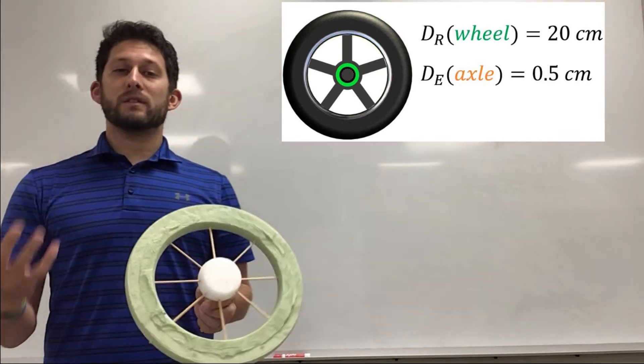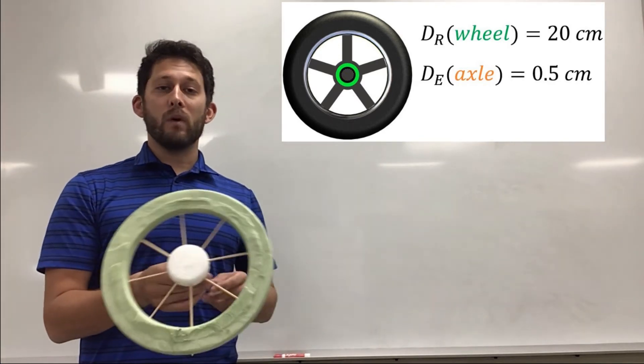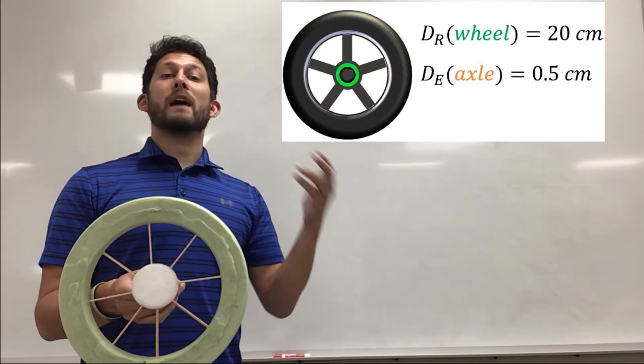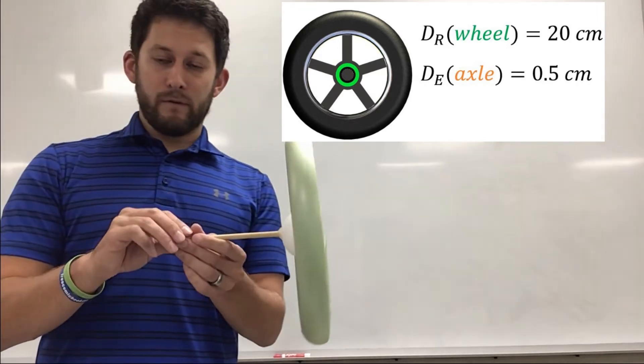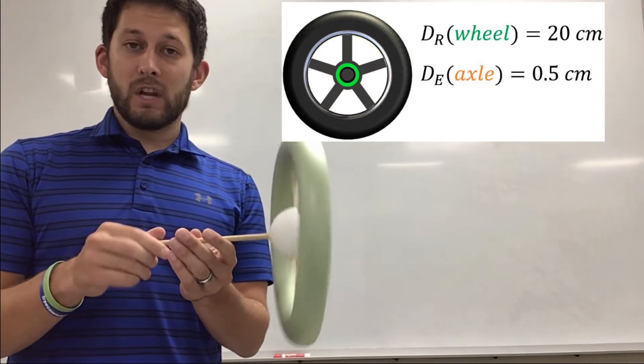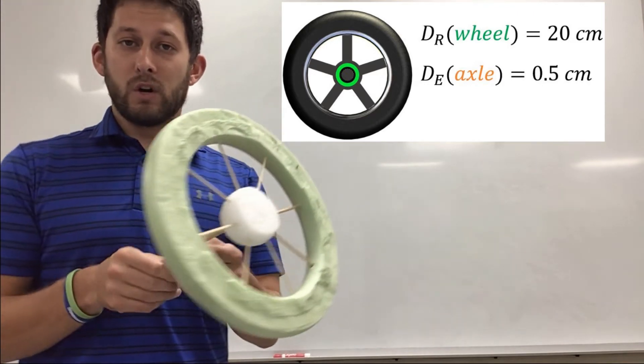So let's say there's a problem that's telling you to figure out what is your IMA if the axle is driving the wheel, meaning my effort force is turning the axle which in turn turns that wheel.